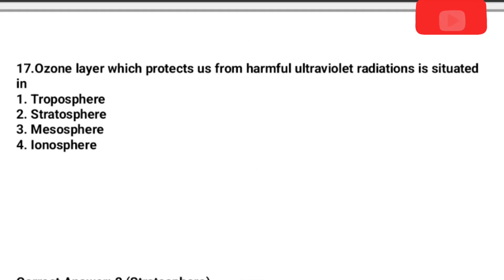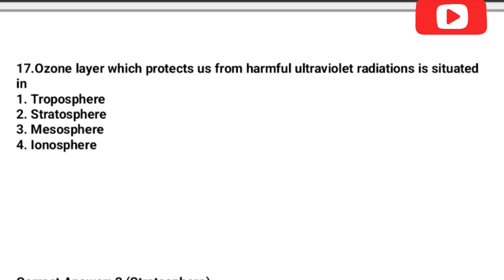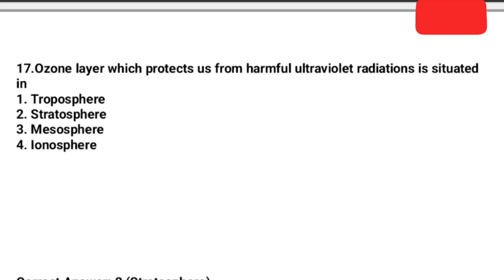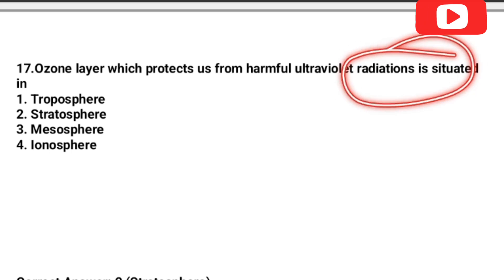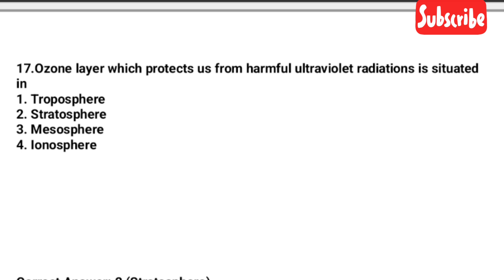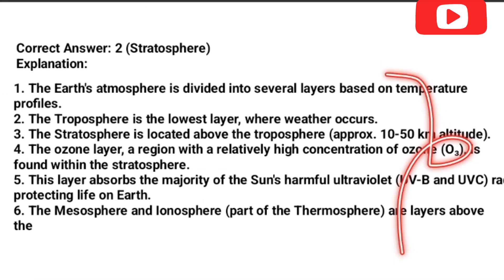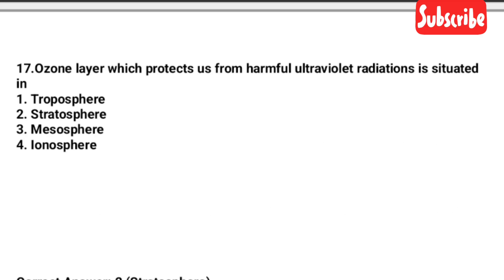Next question: The ozone layer, which protects us from harmful ultraviolet radiations, is situated in which of the following? Options: troposphere, stratosphere, mesosphere, ionosphere. The answer is option number B — stratosphere — as it protects us from harmful ultraviolet radiation.